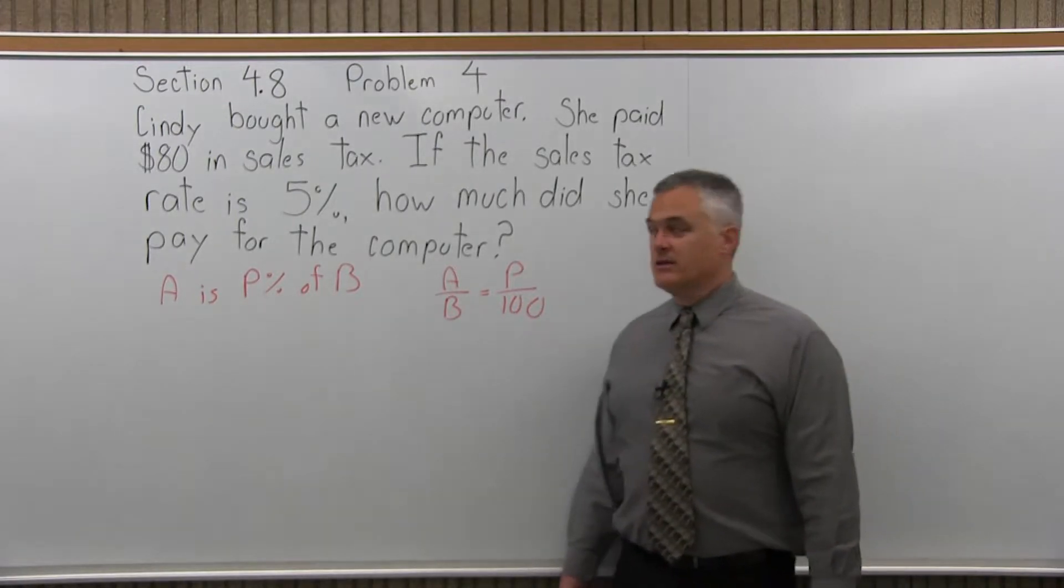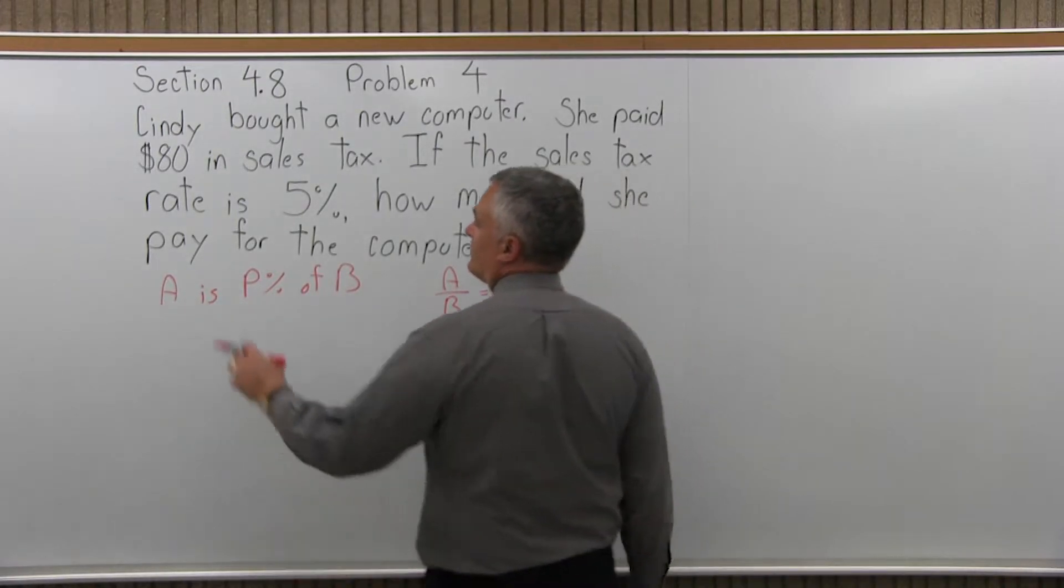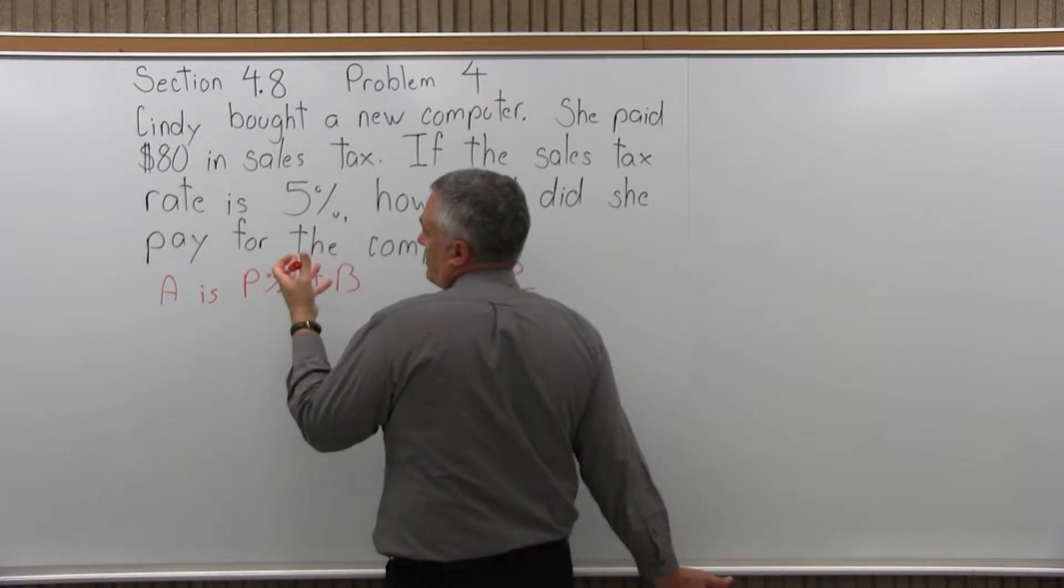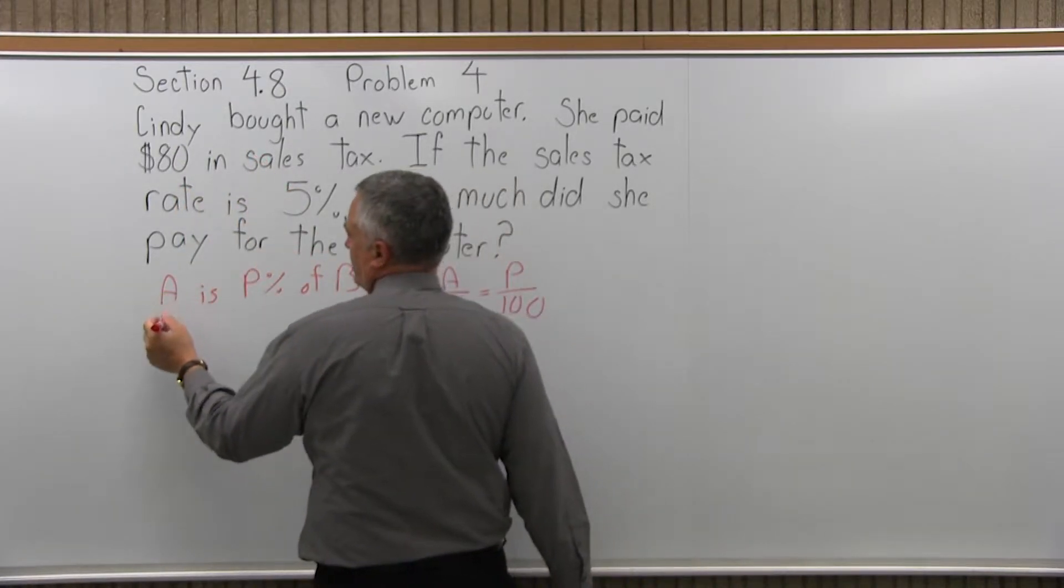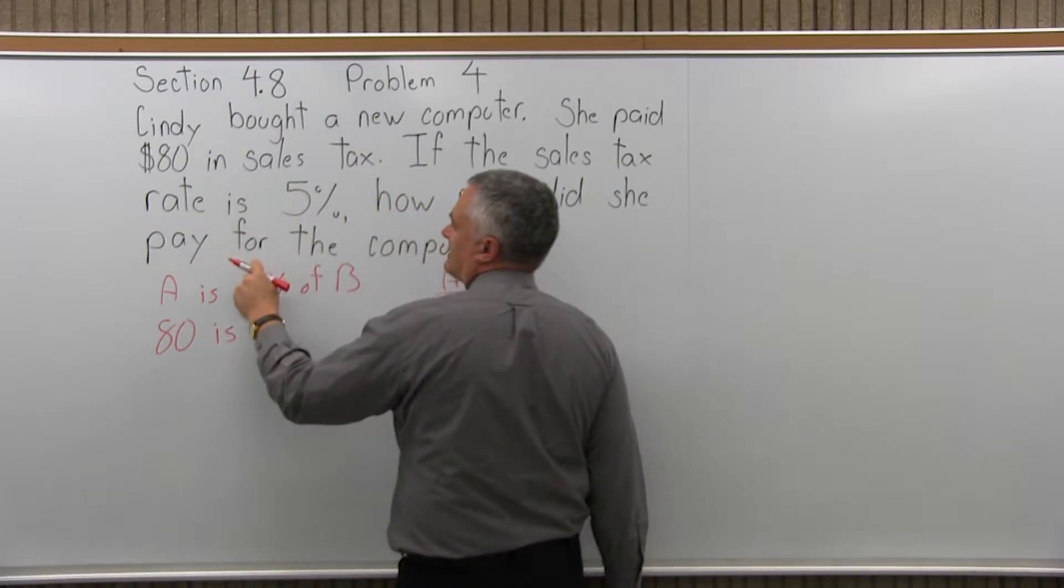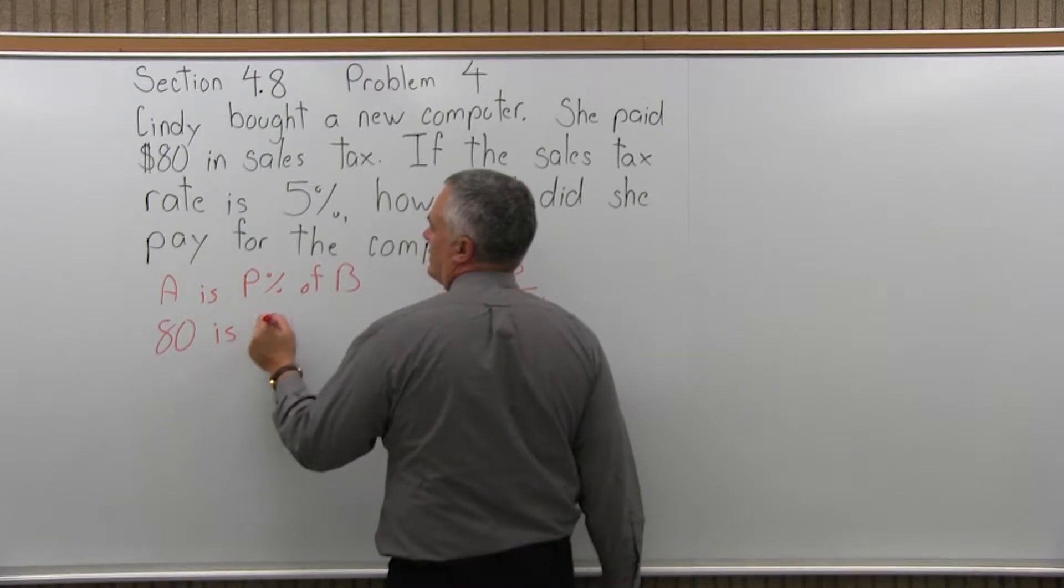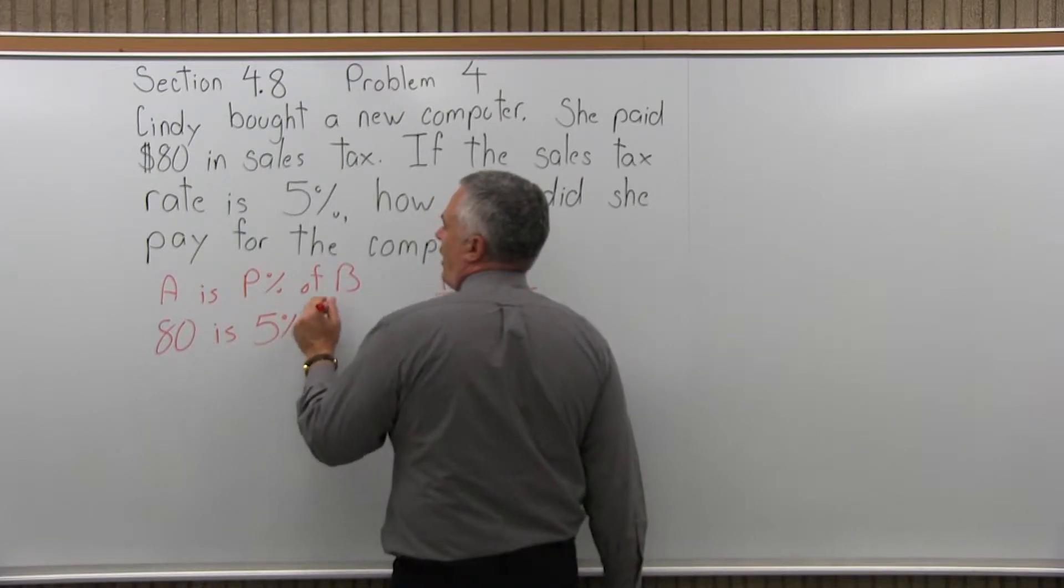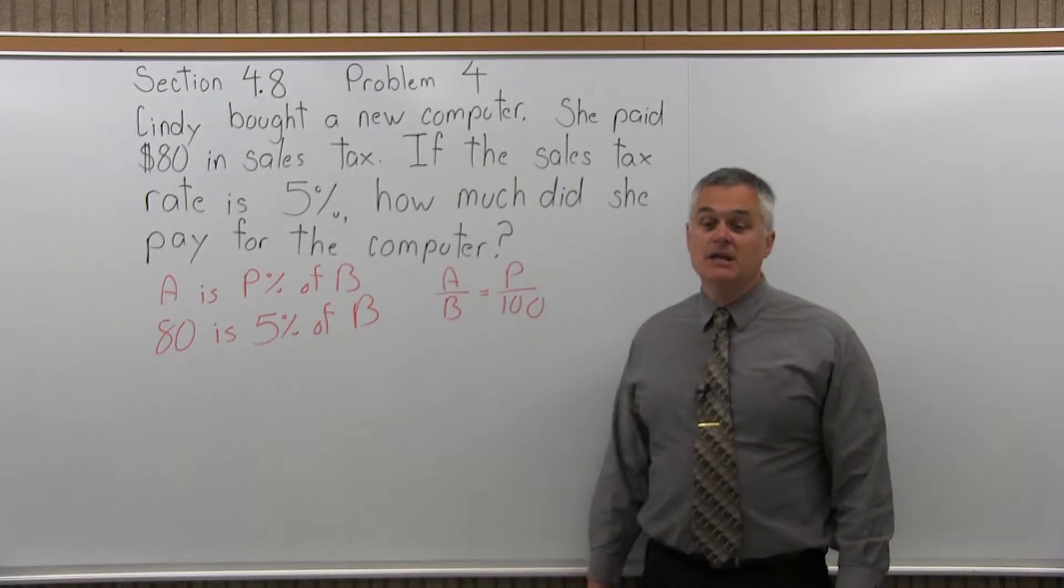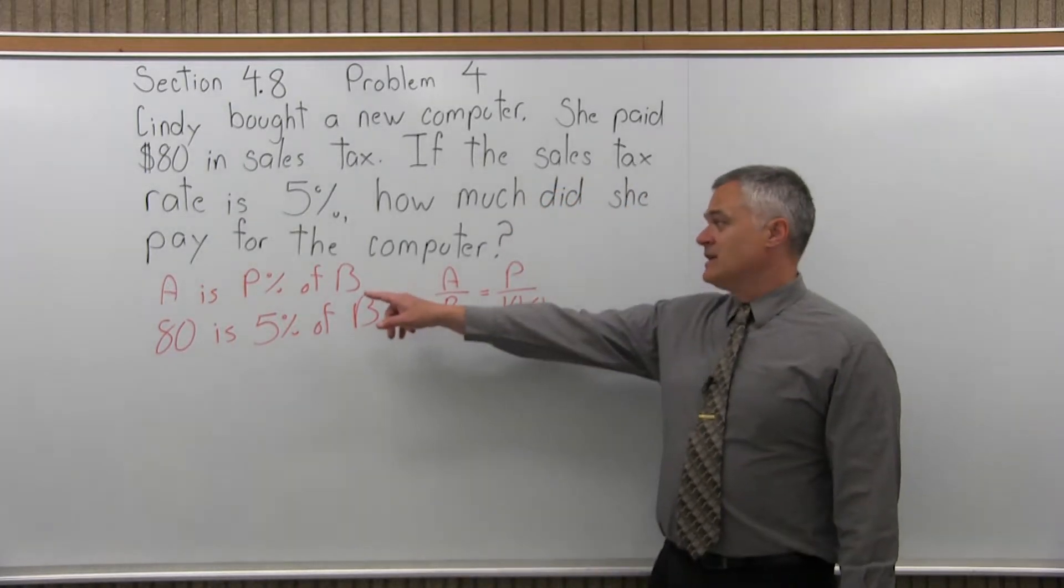And I can write it in this form. So the $80 is 5% of some bigger number, of the total price of the computer. So the A is the 80, the P is 5% of, and the B is the unknown number. So it will stay as a variable, as B. So I do have A as P percent of B.